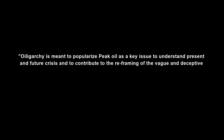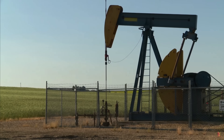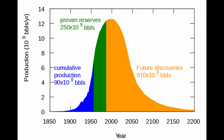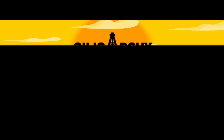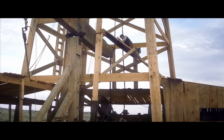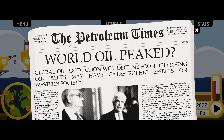Oiligarchy is meant to popularize peak oil as a key issue, to understand present and future crises, and to contribute to the reframing of the vague and deceptive argument of dependency on foreign oil that is dominating the current political discourse in the U.S. Peak oil is a theory that world oil production is a bell curve — there would be a peak, but demand would continue to rise. U.S. oil production by the release of Oiligarchy had peaked in 1970, but the U.S. had been extracting and consuming oil much earlier than other places, so world oil production was going to peak...